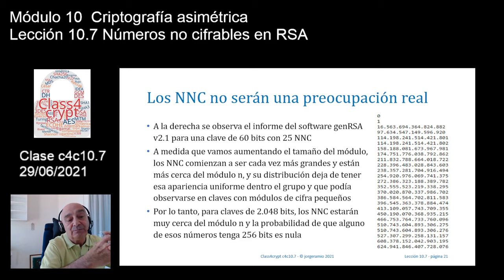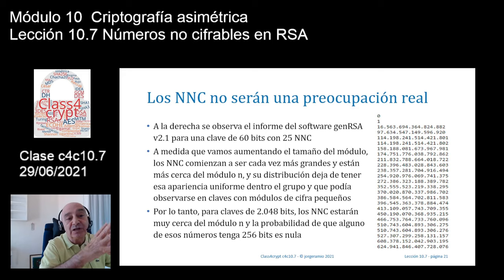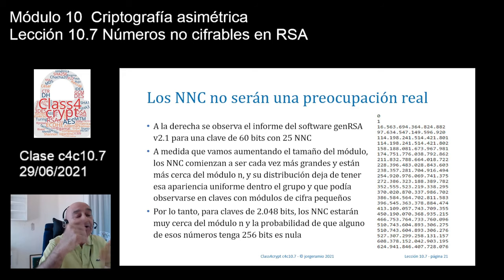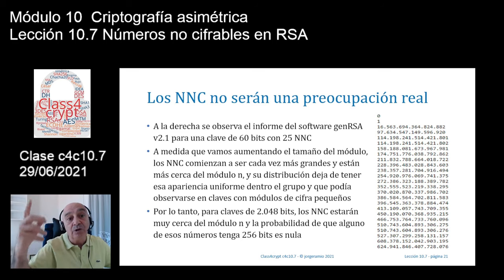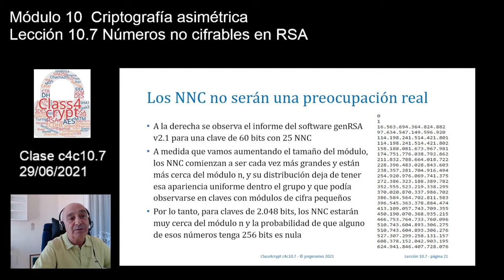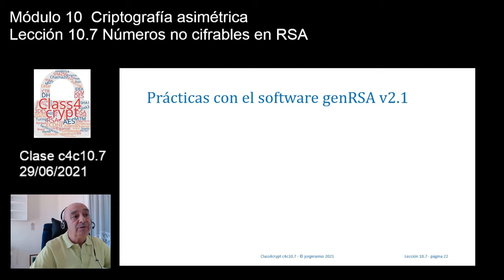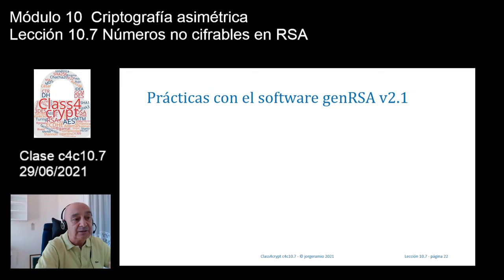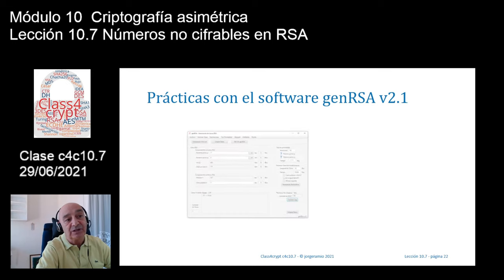En claves grandes, los anillos de números que se forman al hacer ataques a RSA son estratosféricamente grandes, de números de 1000 bits, lo que equivale a 2 elevado a 1000 números distintos, una barbaridad. Con eso ya hemos terminado la parte de teoría.